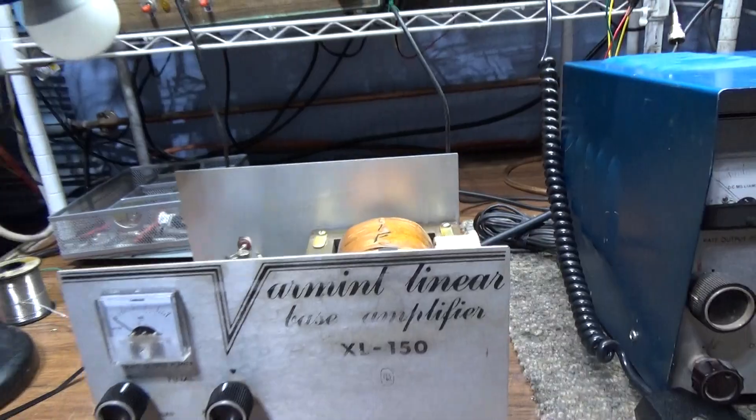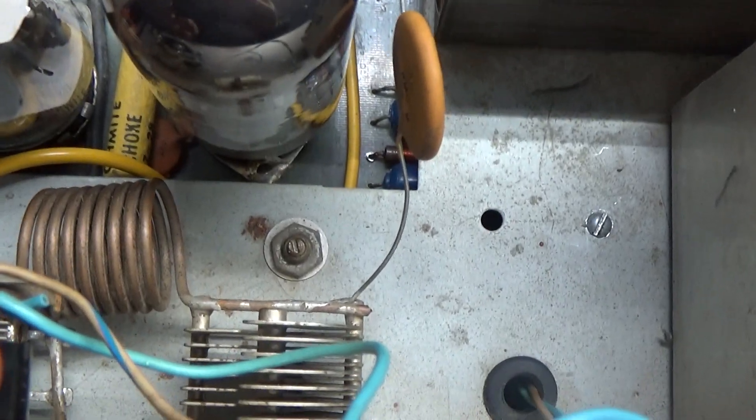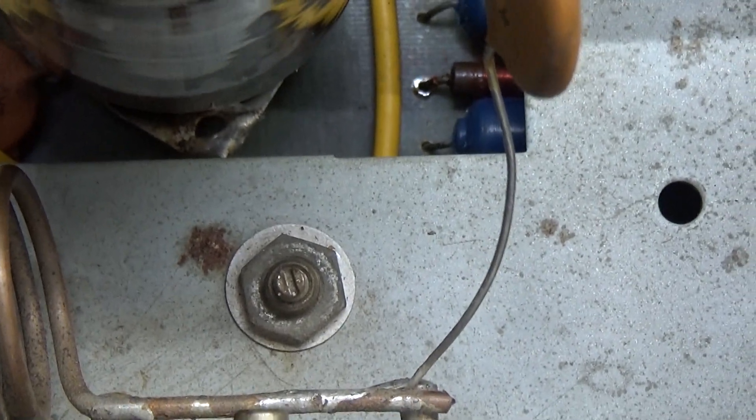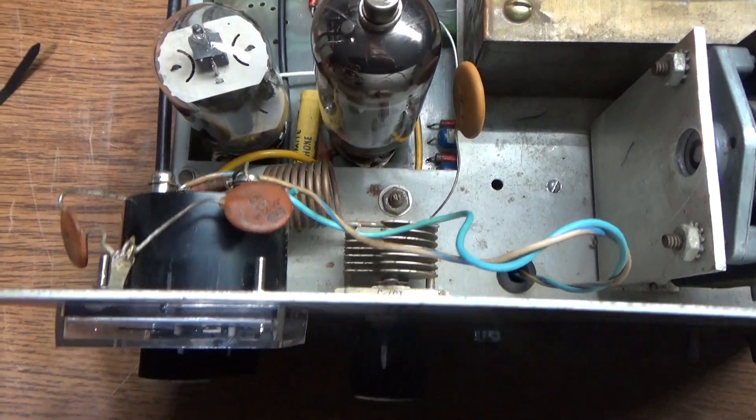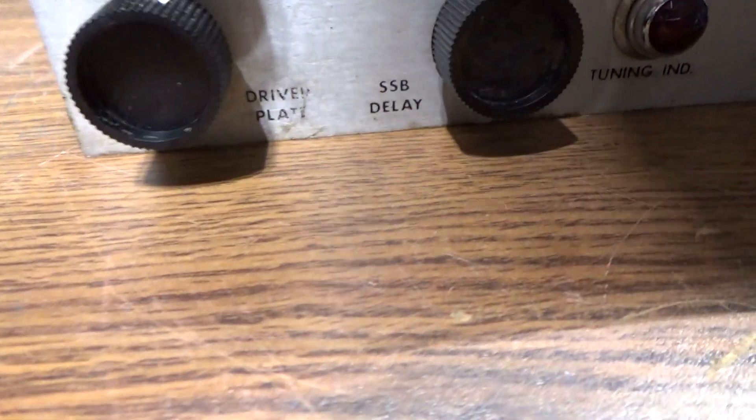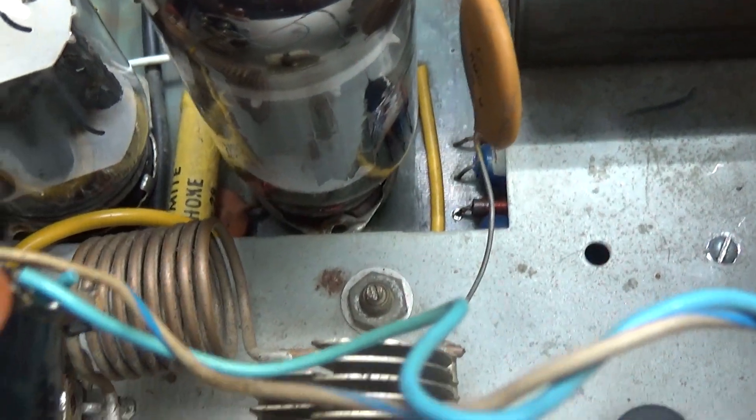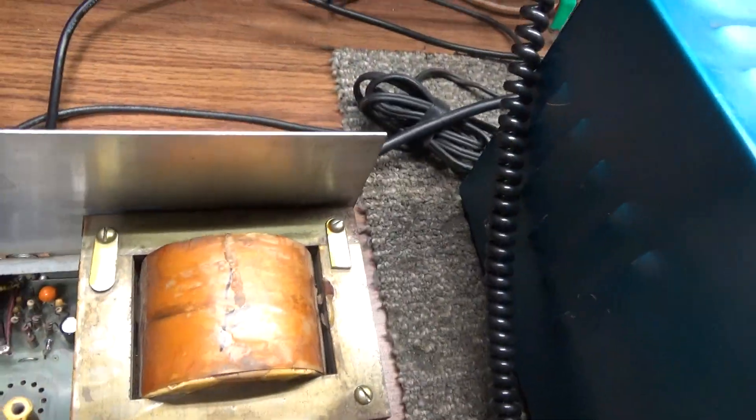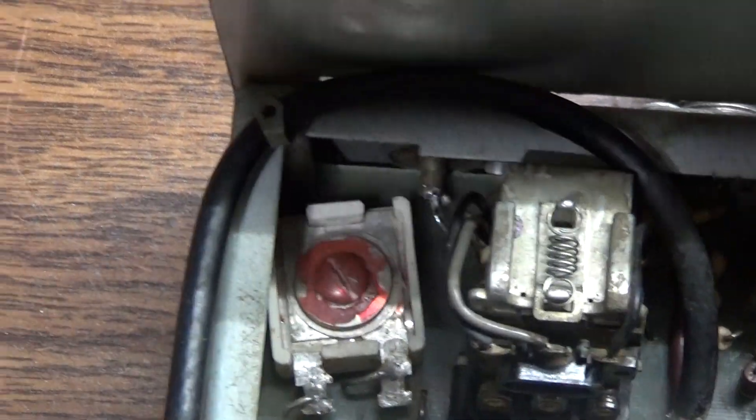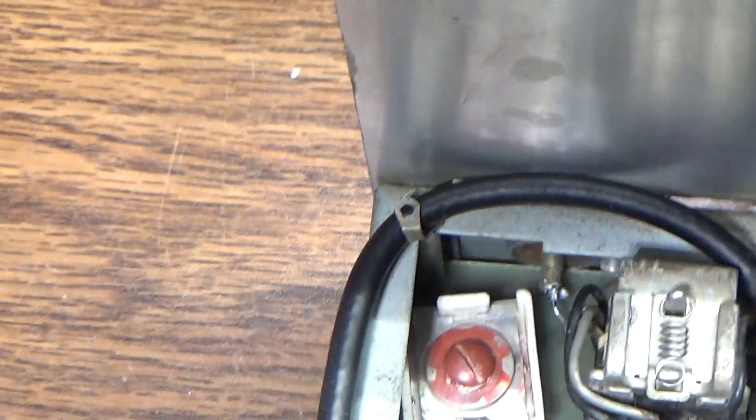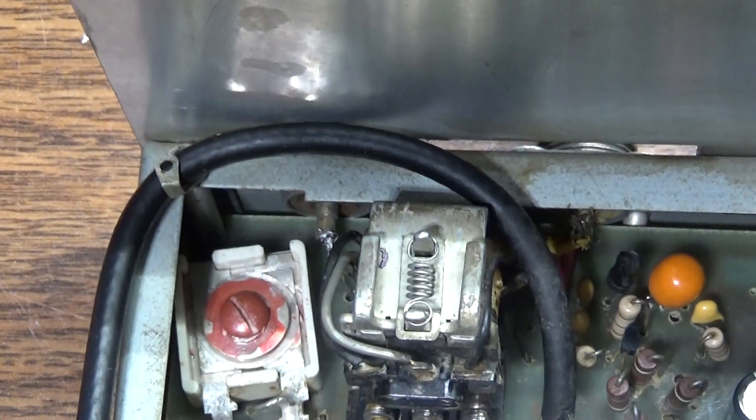This has two trim caps. This one here would be the driver load. On the front it has the driver plate tune. That one on the inside would be driver load, and it uses a cap only for the input tune or input SWR. You can vary it some, but not a lot because it's not a true tuner, just a cap with no inductor on it.